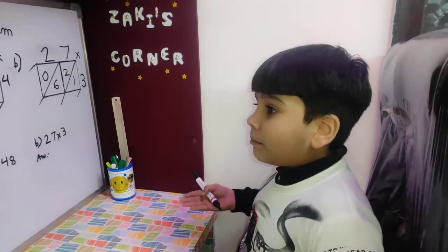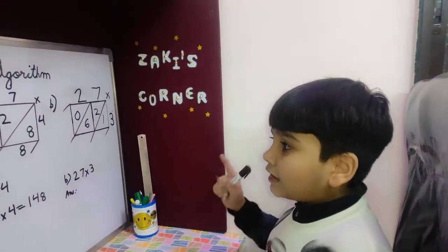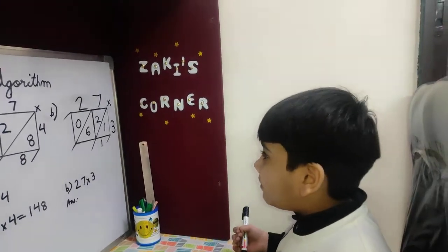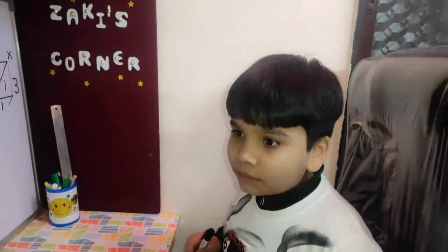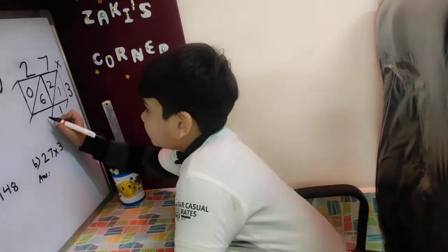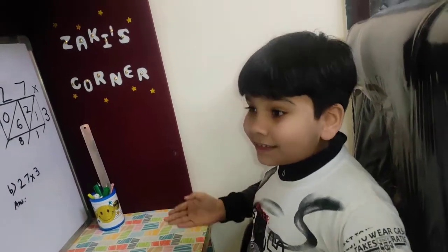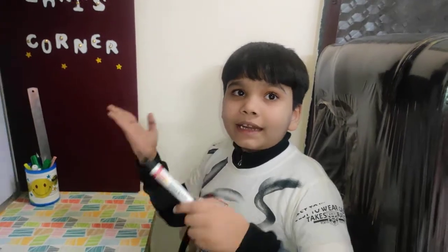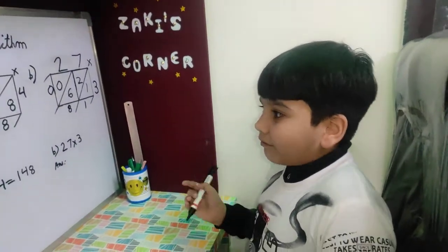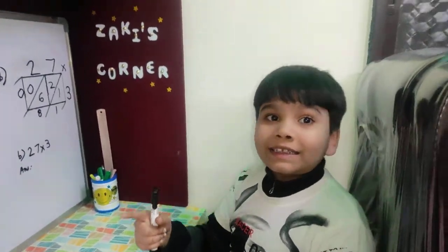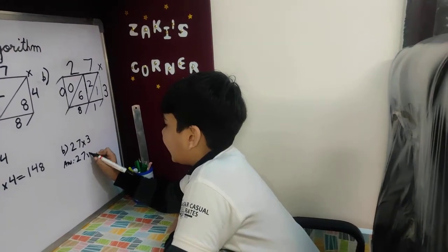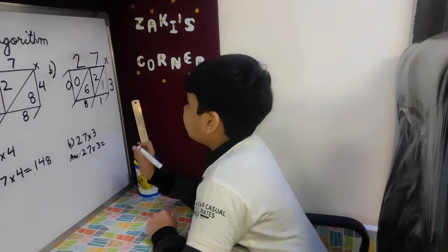Now we have to add the numbers. One is not having a number to add, so one will remain the same. Can you tell me how much is six plus two? Six plus two is equal to eight. Because zero doesn't have a number to add, zero will remain the same. So the answer is 81 — 27 multiply by 3 is equal to 81.